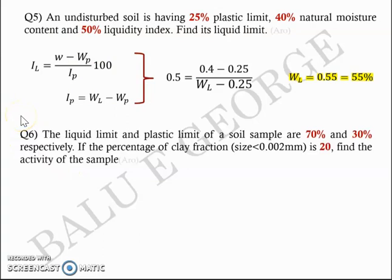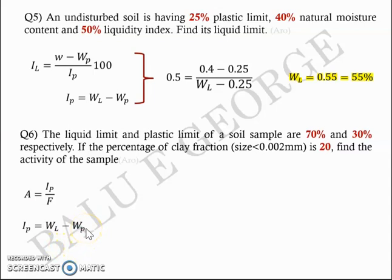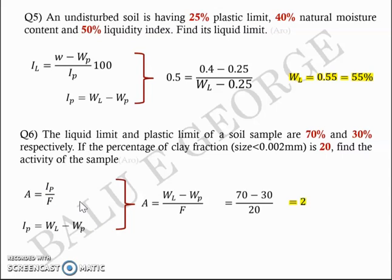Next question: The liquid limit and plastic limit of a soil sample are 70% and 30% respectively. The clay fraction (finer than 2 microns) is 20%. Find the activity. Activity A = IP / F = (wL - wP) / F = (70 - 30) / 20 = 40 / 20 = 2.